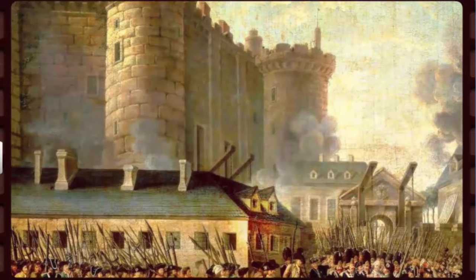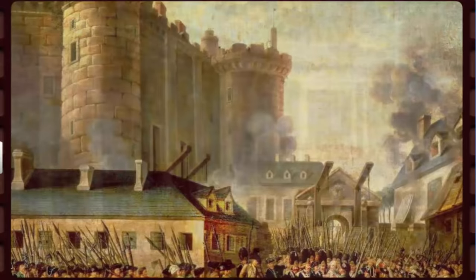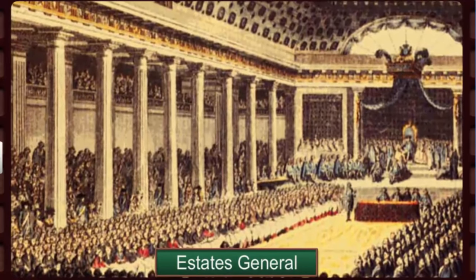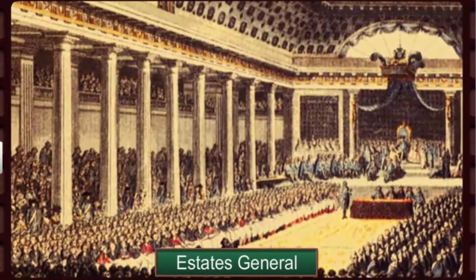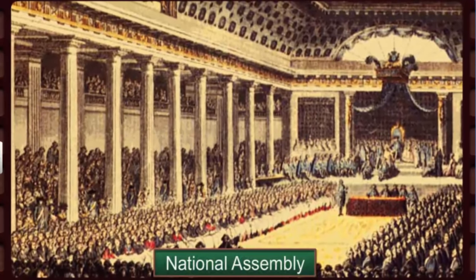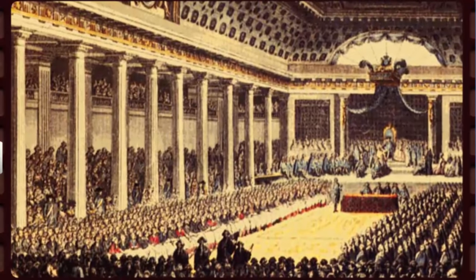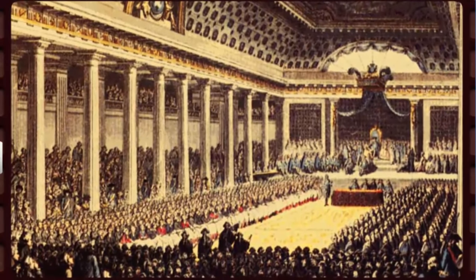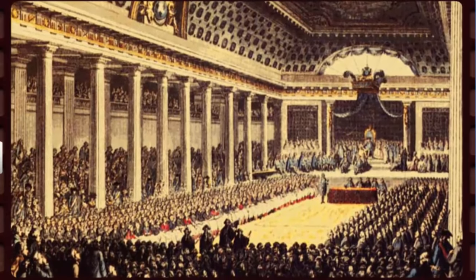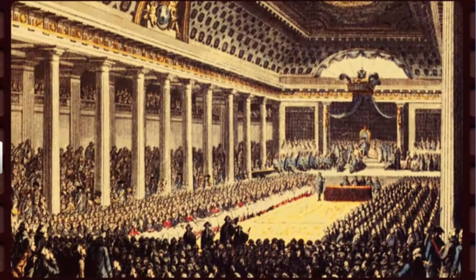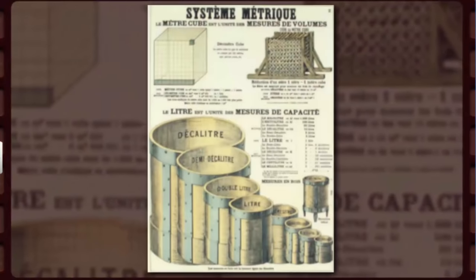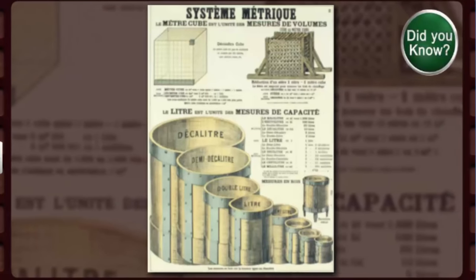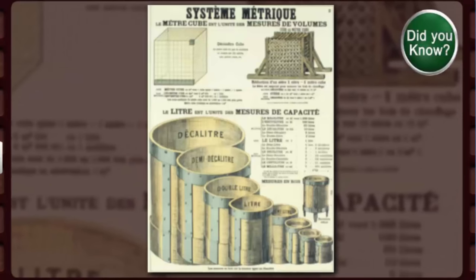The French Revolution had its impact on the administration as well. A body of active citizens — those allowed to vote because they paid taxes — elected the Estates General and renamed it the National Assembly. A centralized administrative system was created, which formulated uniform laws for all French citizens. All internal custom duties and dues were abolished. A uniform system of weights and measures was adopted. Did you know that the metric system we use today was founded by France in 1791?